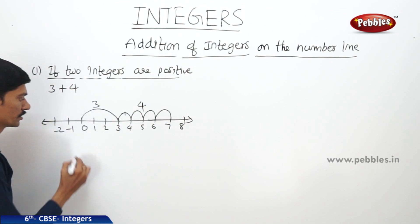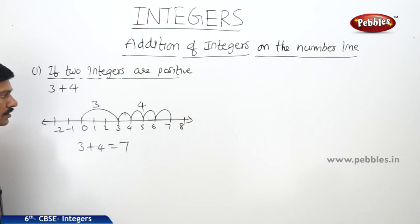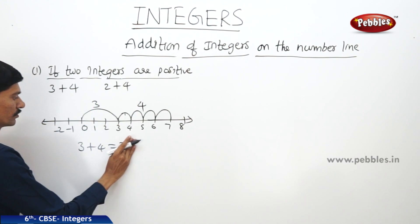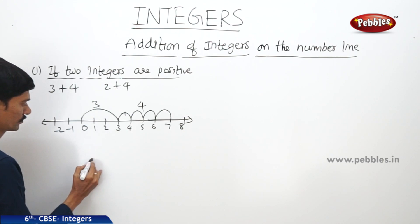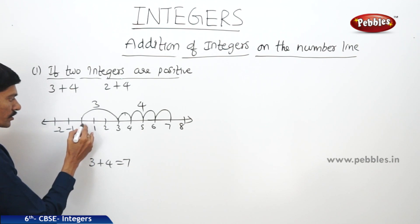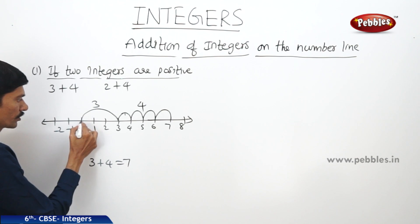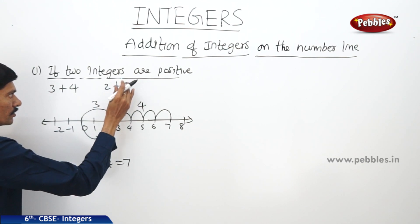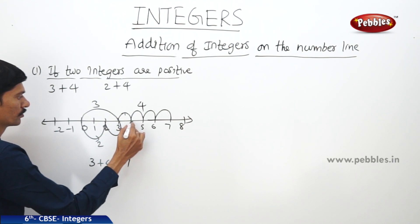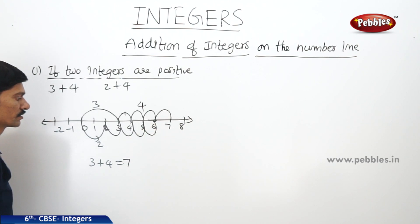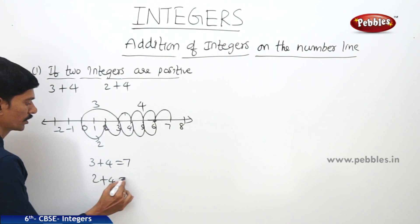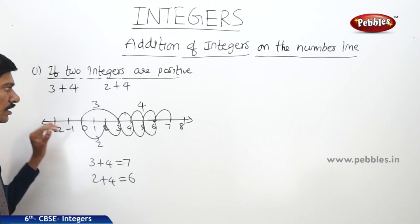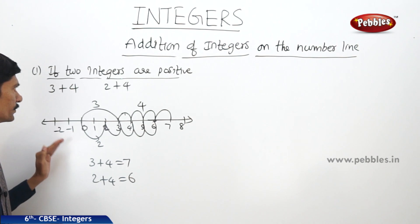We reach 7. So 3 plus 4 equals 7. Now if you want to add 2 plus 4, we first start from 0 and move 2 steps to the right of 0 — that is 2. Then from 2 we move 4 more steps: 1, 2, 3, 4 steps, and we reach 6. So 2 plus 4 equals 6. When two positive integers are added, we add them on the number line by moving as many steps as given in the question.